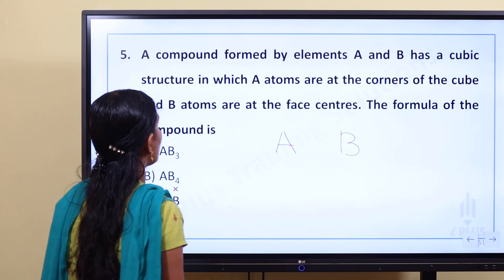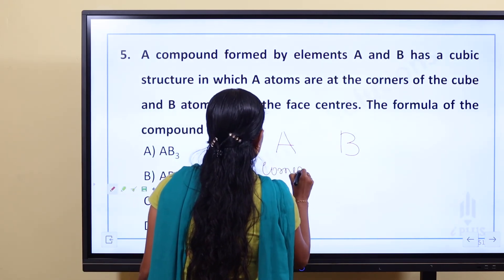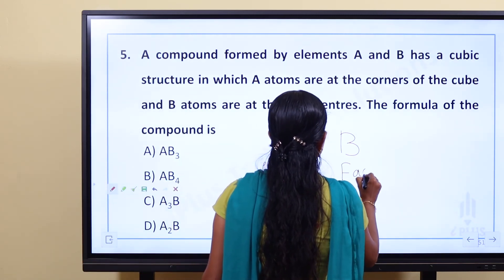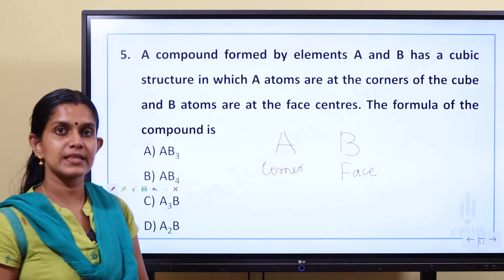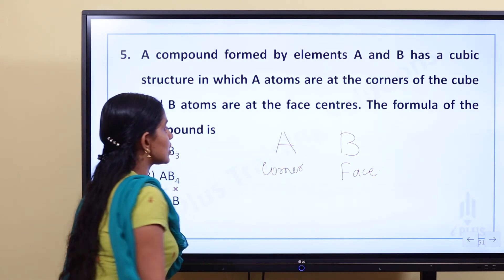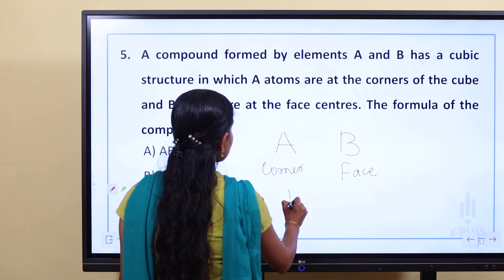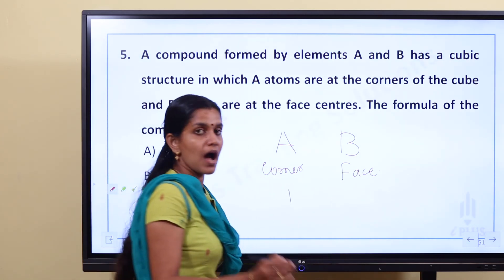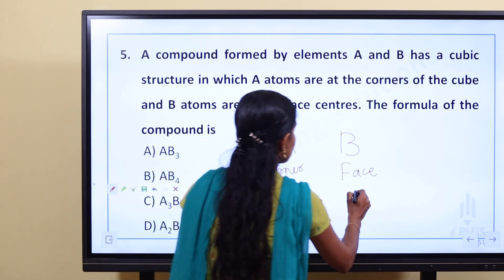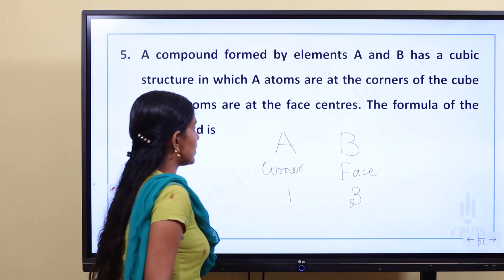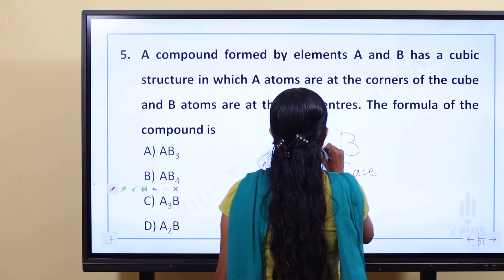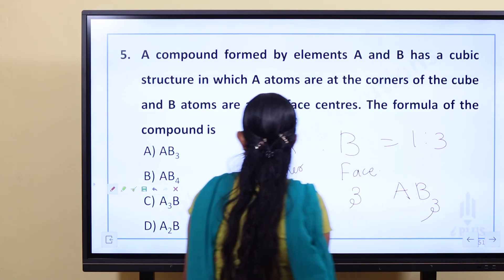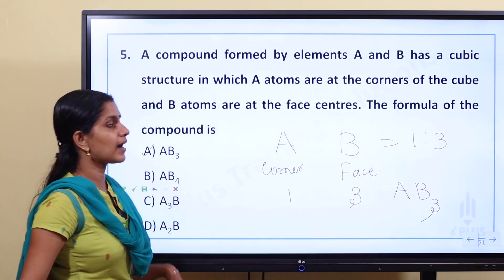A atoms are at the corners. There are 8 corners × 1/8 = 1 atom of A per unit cell. B atoms are at the face centers: 6 faces × 1/2 = 3 atoms of B per unit cell. So A to B ratio is 1 to 3, giving the formula AB3. Option A is the correct answer.